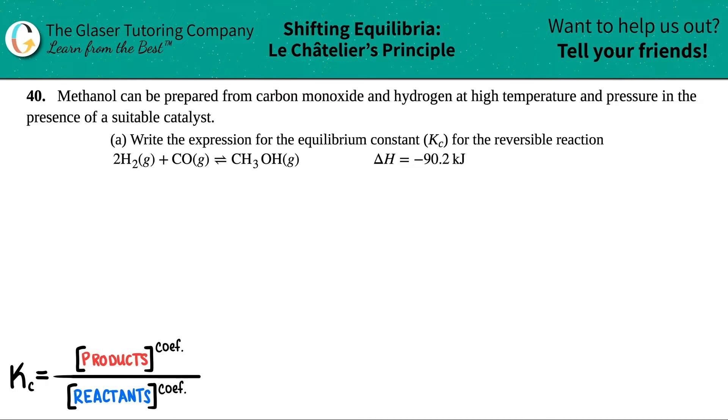Number 40. Methanol can be prepared from carbon monoxide and hydrogen at high temperature and pressure in the presence of a suitable catalyst. And then we have letter A. Write the expression for the equilibrium constant Kc for the reversible reaction, and then we have this right here.